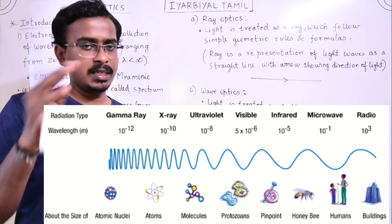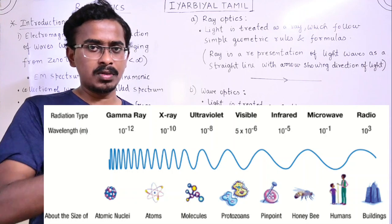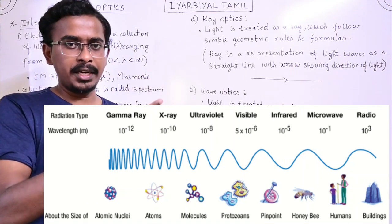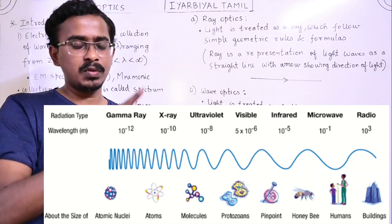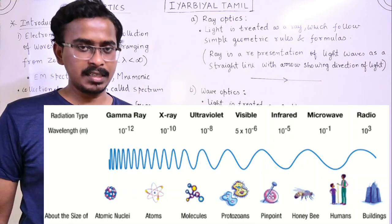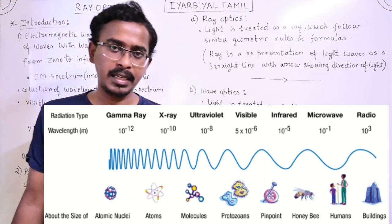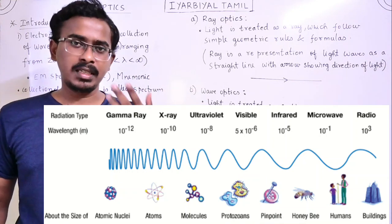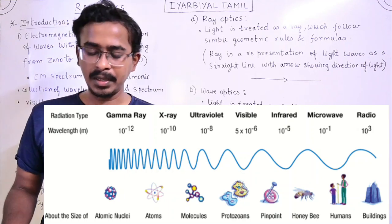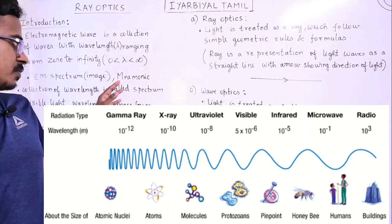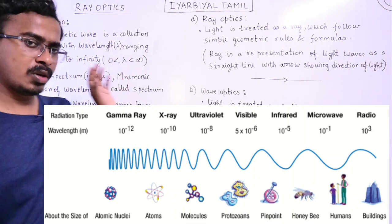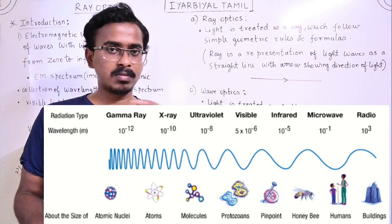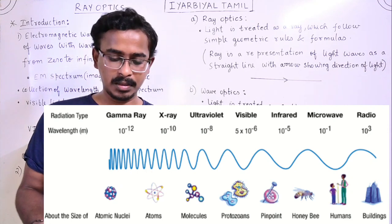As the wavelength increases from Gamma Rays to Radio Waves, the frequency will decrease. Radio waves have the largest wavelength and lowest frequency. To memorize the order, we can use a mnemonic — it's not a traditional mnemonic but a way to memorize the spectrum order.